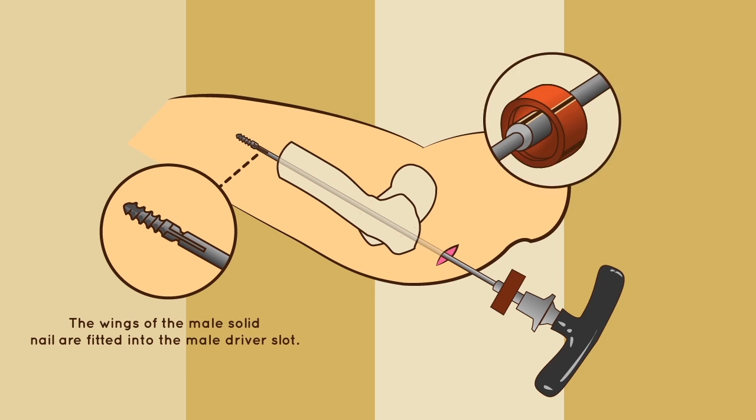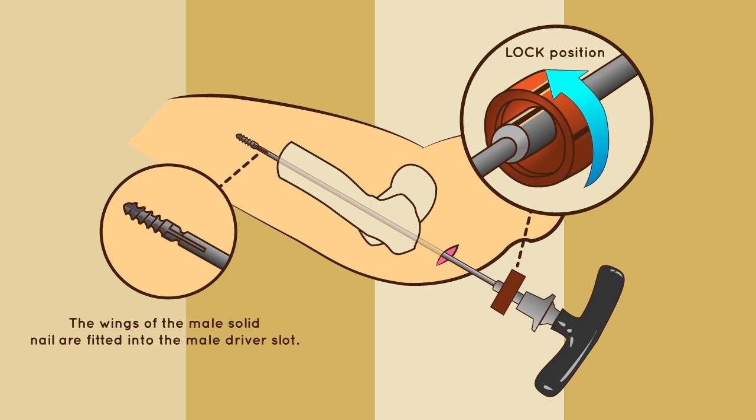To lock the male implant, simply rotate the eccentric ring to the lock position.